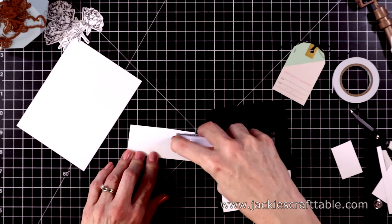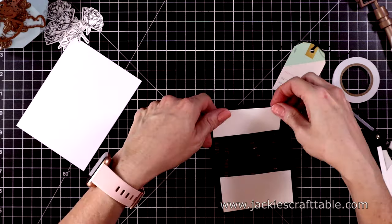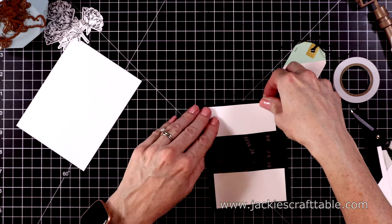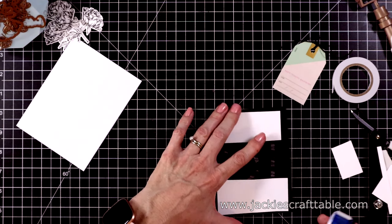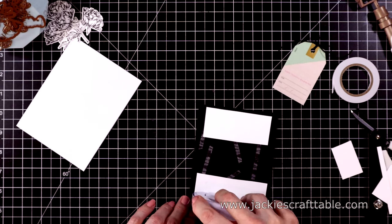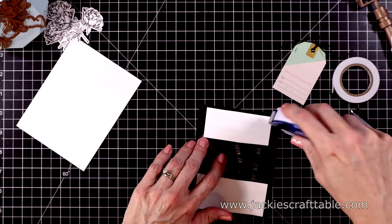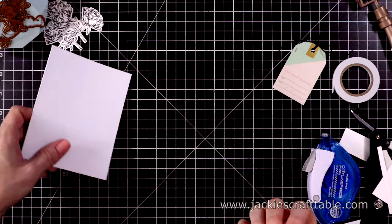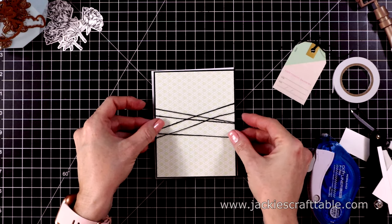And now I can add a little bit more dot liner at the top and bottom over the white cardstock. And then center this on the card base.